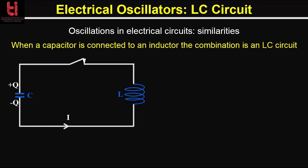Now coming back to this LC circuit, initially the switch is open and the capacitor is charged to a voltage V. The charge Q on the capacitor is equal to V times C, where C is the capacitance. Now if we close the switch, the charge begins to flow through the circuit — that is through the inductor — and the current I equals dQ/dt flows in the circuit. This time-varying current produces a voltage across the inductor equal to L·dI/dt.